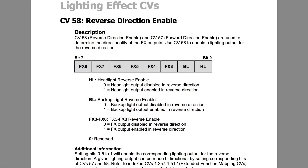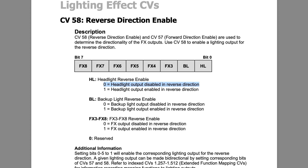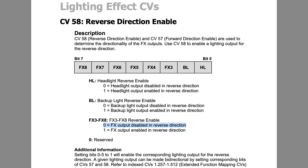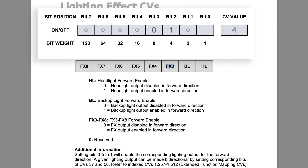CV 58 is where we're going to disable some of these lights in the reverse direction. When moving in reverse, we want to extinguish our headlight, leave the number boards on, but also extinguish the Mars light. So looking at our CV value, the only one we're going to have on is FX3, because there is no backup light on here. We're going to set CV 58 to a value of 4. If you did have a reverse light on the back, you would add 2 for a value of 6. Now when moving in the forward direction you can see the lights are on, and when changing directions to reverse, the headlight and Mars light have both extinguished but the number boards are still staying on.